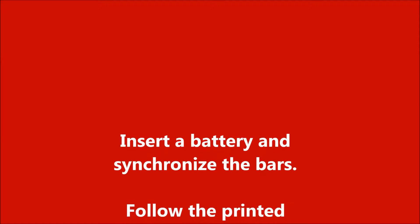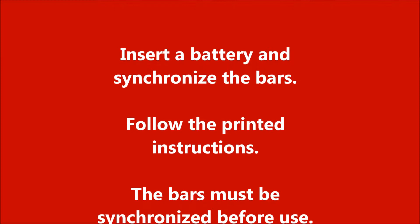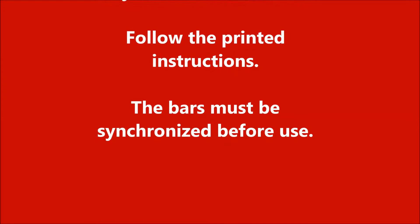The bars need to be synchronized before use. Follow the printed instructions on the instruction sheet. Take a battery from the hardware box and put it in the cradle on the control tower. Press the green activation button on the left side of the tower and press the up and down controls at the same time. Hold the controls until the bars stop moving and the display reads zero, zero, zero. Do this for both the height and the width controls.